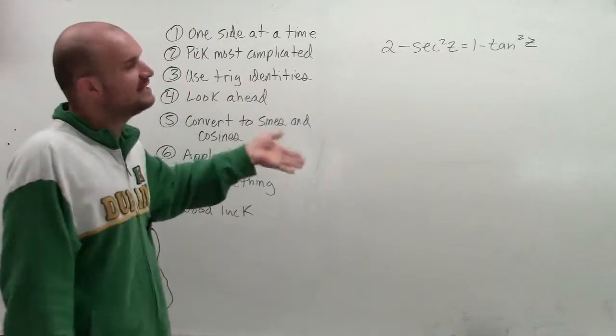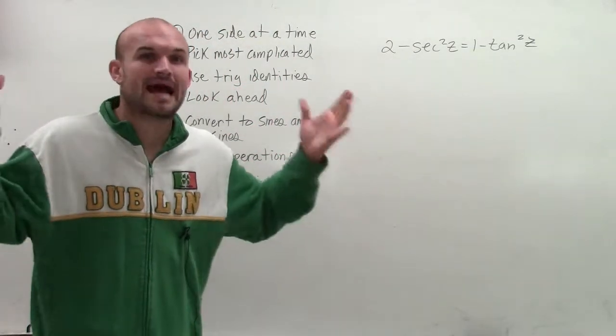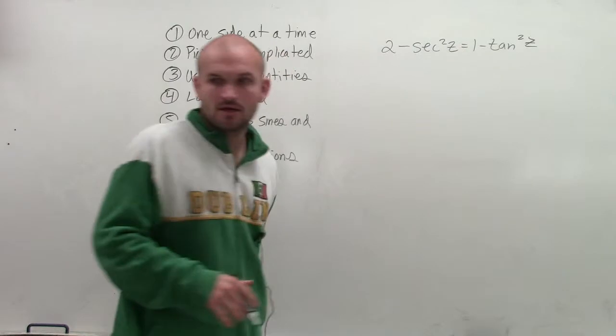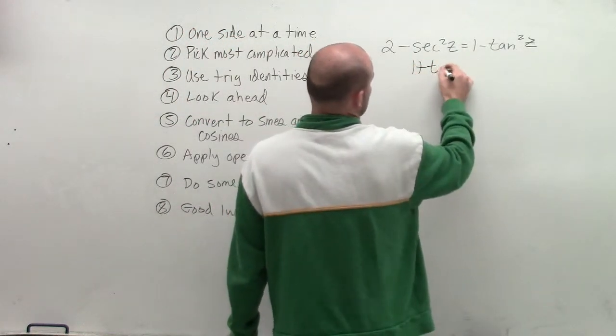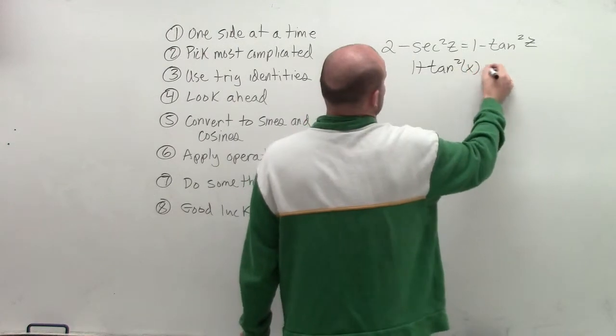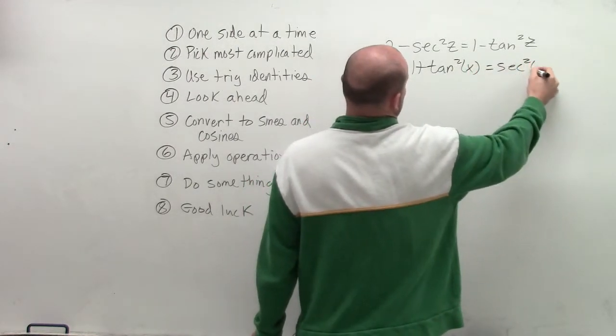So by looking ahead, I notice I have secant squared, which automatically tells me I have to use my Pythagorean identities. We know that 1 plus tangent squared of x is going to equal secant squared of x.